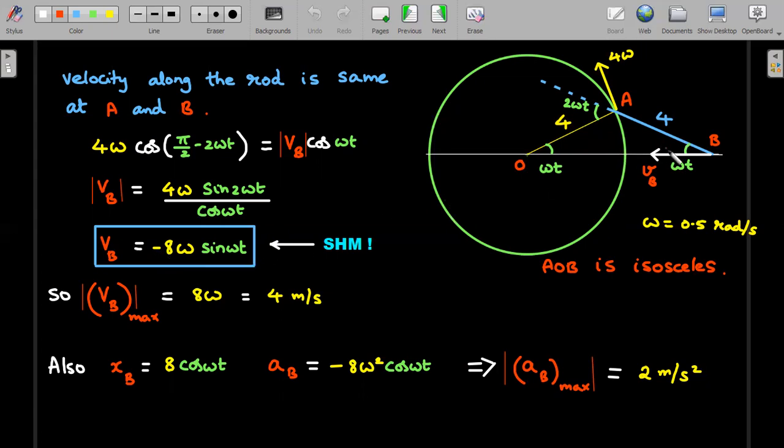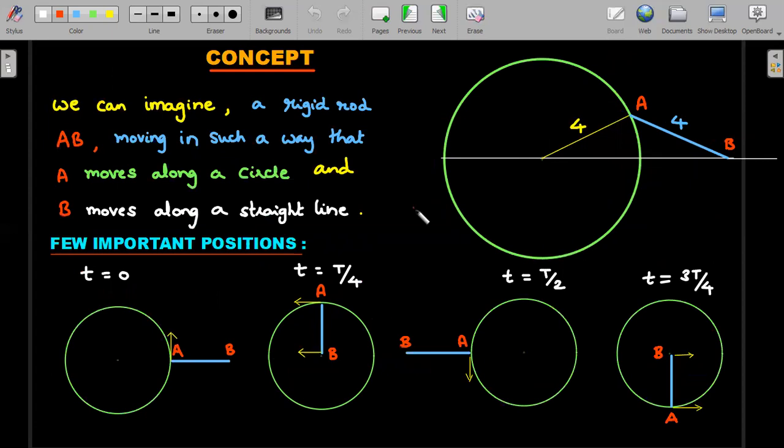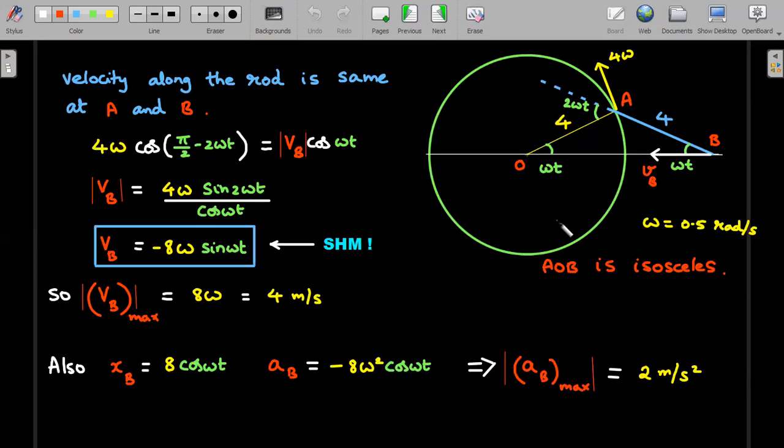The speed vB, therefore, you rearrange and end up getting this. Using sin(2θ) = 2sin(θ)cos(θ), you'll get this number. I have introduced a minus sign to respect the fact that at t=0, the value of the velocity is zero, but at t>0, B starts moving towards negative x-axis. This is nothing but SHM. So the value of vB_max is going to be 8ω when sin(ωt) becomes 1, that is ωt = π/2. So that is this position - this is the position where vB becomes maximum. The value of that maximum is 8ω, with ω substituted as 0.5, you get 4 m/s. This was one of the options.